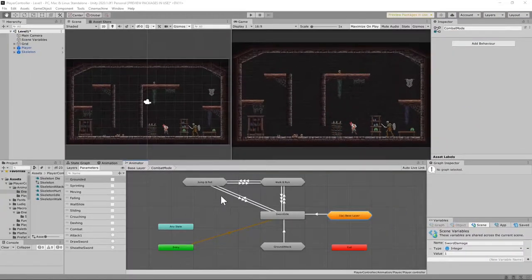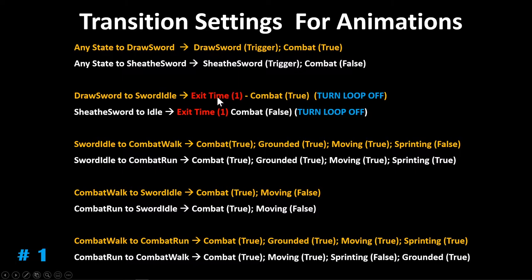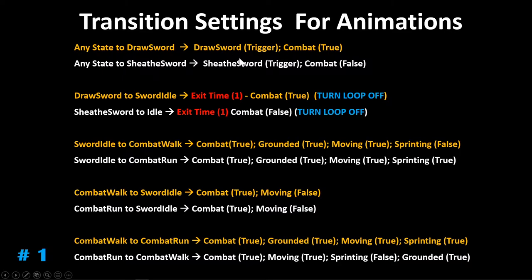Now we have to set up transitions for all those animations — there are three pages of this, and yes, I know that is a lot. There is a pattern to these, so try to do them one at a time and knock them out. From any state to draw sword, this is a trigger — set combat to true. Special note on draw sword to sword idle: there is an exit time of one on draw sword.